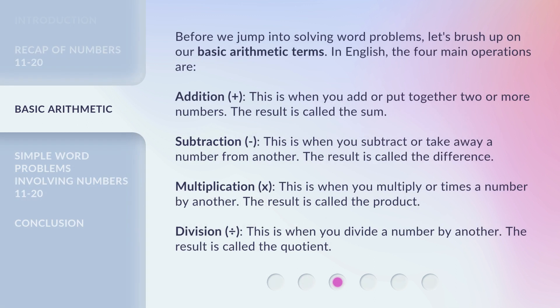Before we jump into solving word problems, let's brush up on our basic arithmetic terms. In English, the four main operations are addition (+). This is when you add or put together two or more numbers. The result is called the sum.